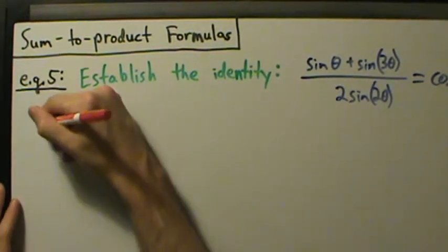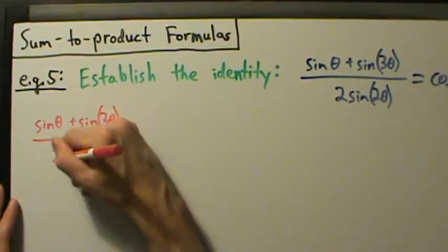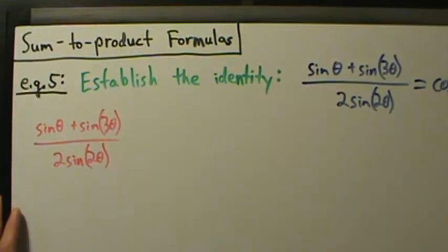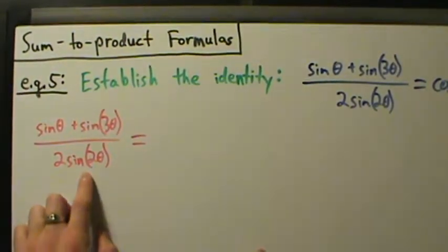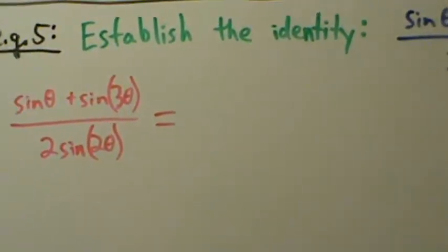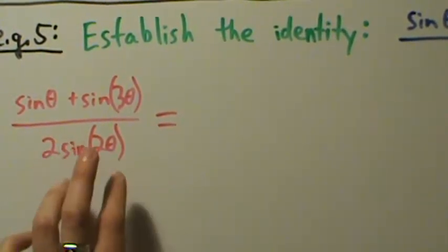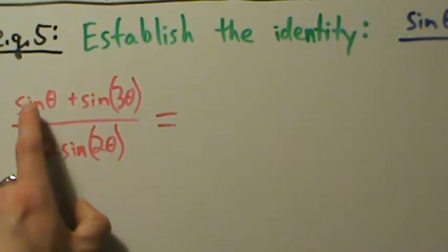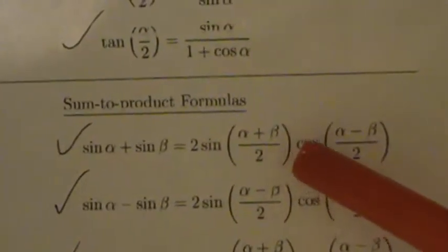So we have sine of theta plus sine of three theta, all divided by two sine two theta. We're talking about sum to product formulas, so let's try to rewrite sine of theta plus sine of three theta. Notice we have a double angle in the denominator. We could use a double angle formula, but let's hold off and just simplify the top first using the sum to product formula: sine of alpha plus sine of beta equals two sine of (alpha plus beta)/2 times cosine of (alpha minus beta)/2.